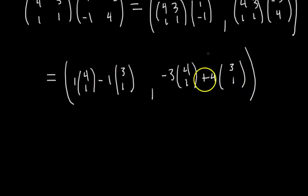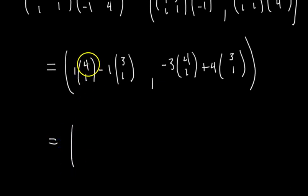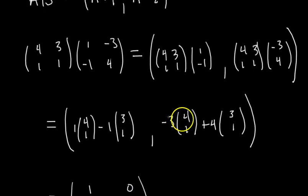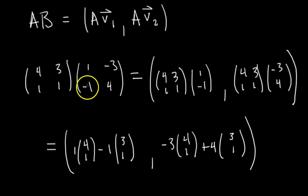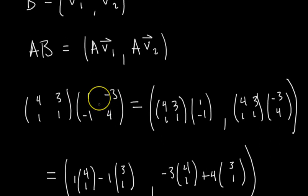These all will simplify to two column vectors. Here we have 4 minus 3 is 1, and 1 minus 1 is 0. And then in our second column, we have negative 12 plus 12 is 0, and negative 3 plus 4 is 1. So this is the alternate way to do it. And because I was showing all these steps, it looks more complicated. But you can just do this in your head. Once you get good at it, you can just picture it in your head and it saves a lot of time.